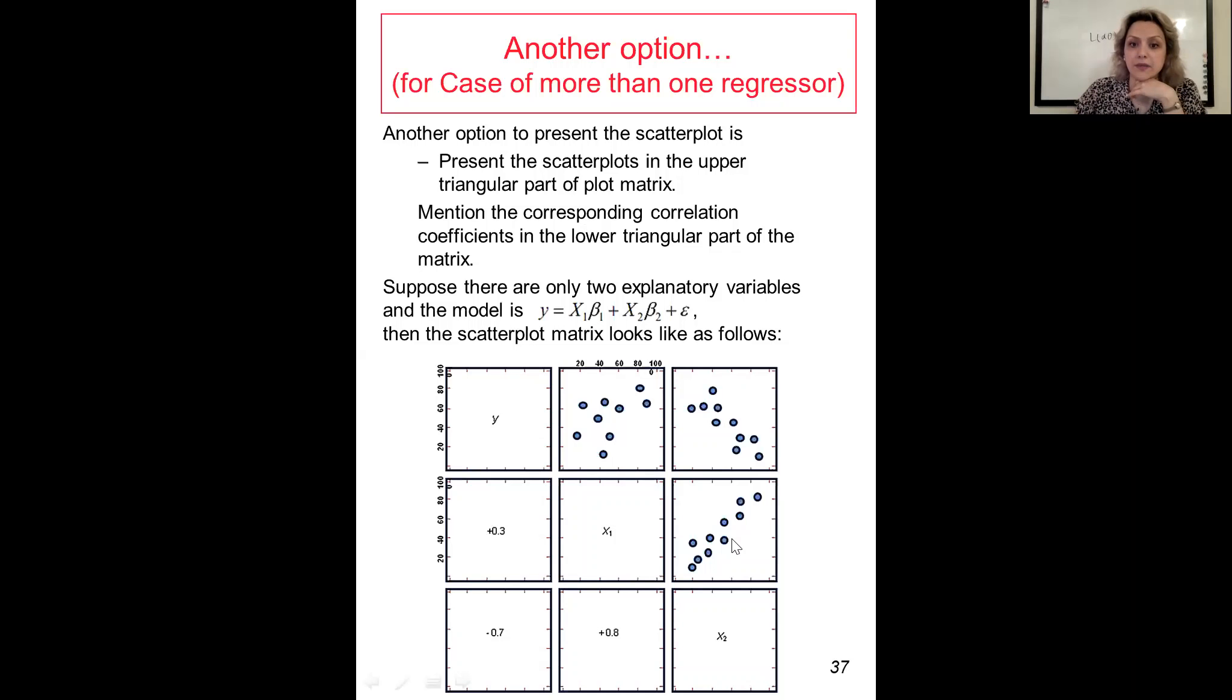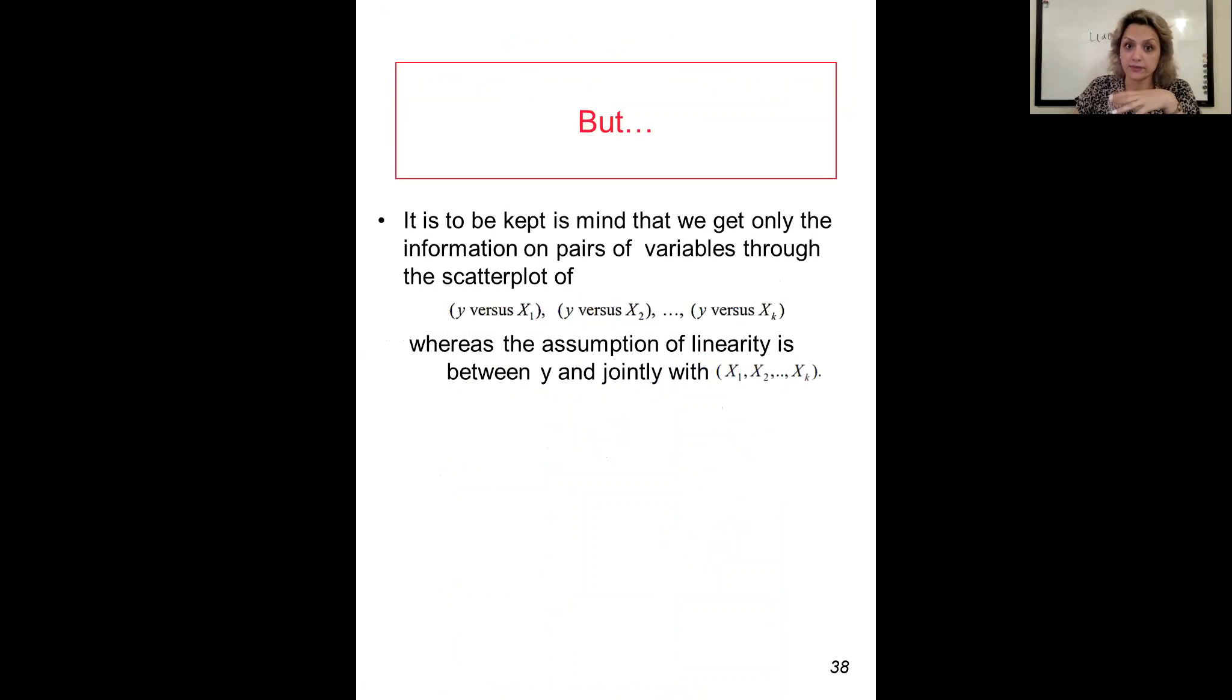It is to be kept in mind that we get only the information on pairs of variables through the scatter plot, whereas the assumption of linearity is between y and jointly with x1, x2, and xk.